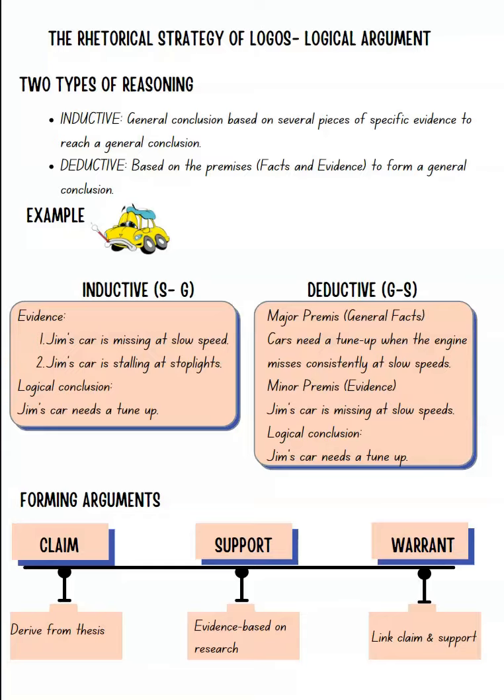Deductive reasoning works the other way. You start with a general idea — for example, cars need to be serviced every six months. Then you come up with specific details: your car is stopping at stop lights and running very slowly. All of this specific evidence tells you that you have not serviced your car in six months and you need to go service it. That is deductive reasoning.